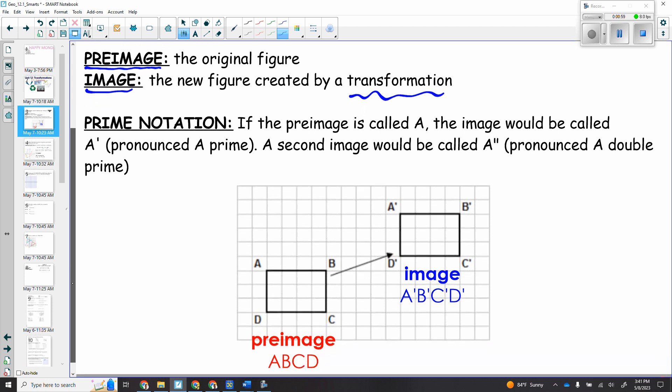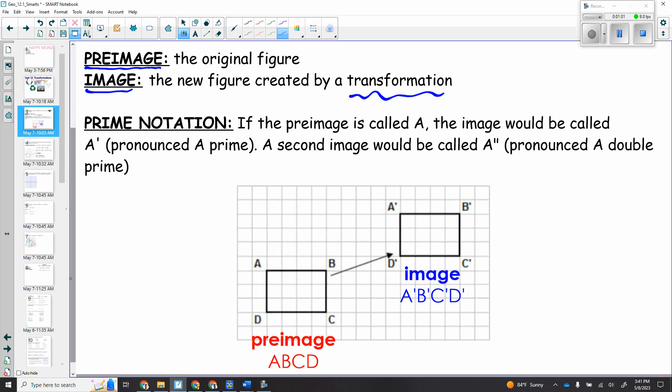There's some words that you need to know with this, starting with the pre-image. The pre-image is just the original figure, right? And that means the image, the new figure created by the transformation. So if you start with something original and you flip it or rotate it, the new one that you create is going to be called the image. The original was the pre-image.